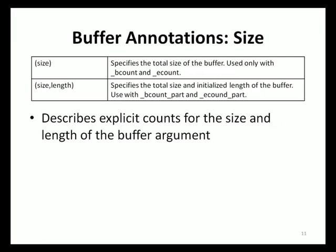The annotations found in the size category indicate the explicit counts for the size and length of a buffer argument, and are used in conjunction with other buffer annotation categories such as size units and initialization. The _size annotation indicates the total size of the buffer. The _size_length annotation is similar but also has a length component indicating how much of the buffer is initialized by the function. Examples of how to use the size annotation will be shown when the size units and initialization categories are discussed.